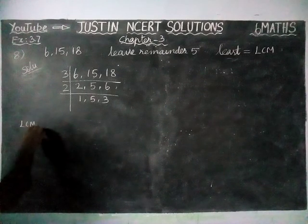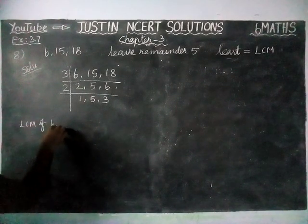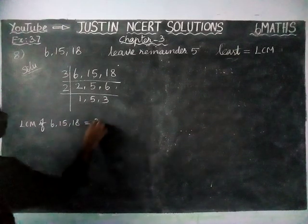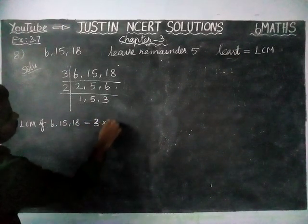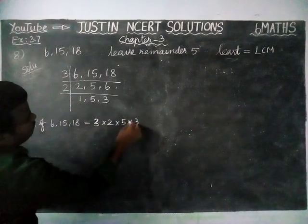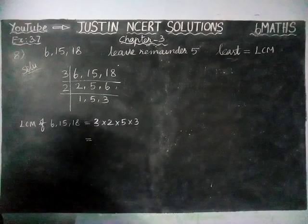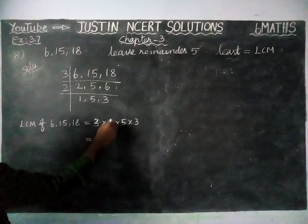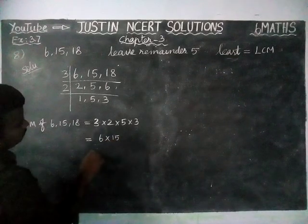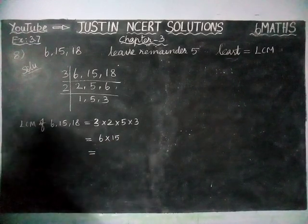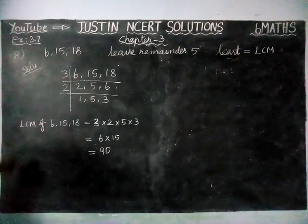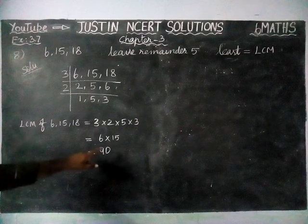So LCM of 6, 15, and 18 is equal to 3 × 2 × 5 × 3. That is 3 twos are 6, 5 threes are 15, which equals 6 × 15, which equals 90. So now we got the answer: LCM of 6, 15, and 18 is equal to 90.